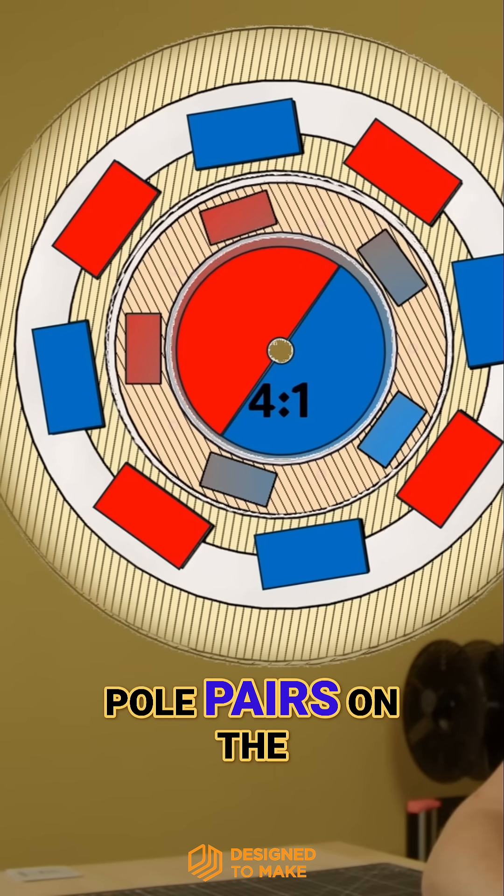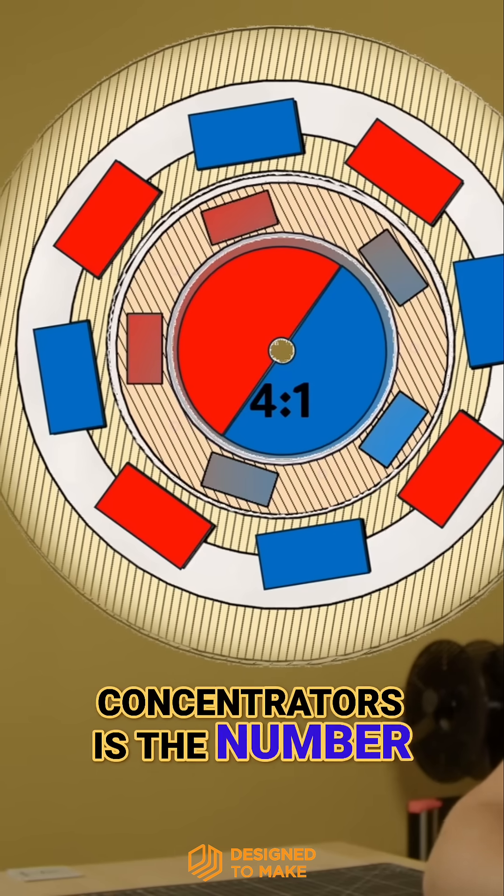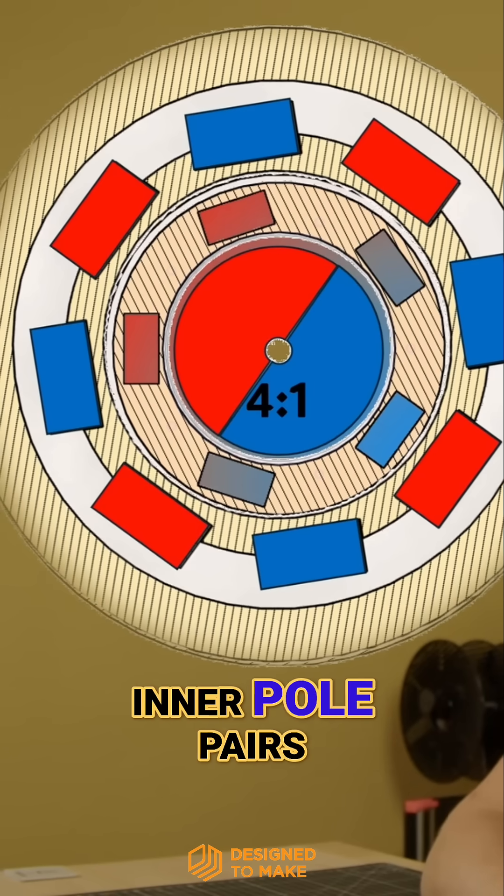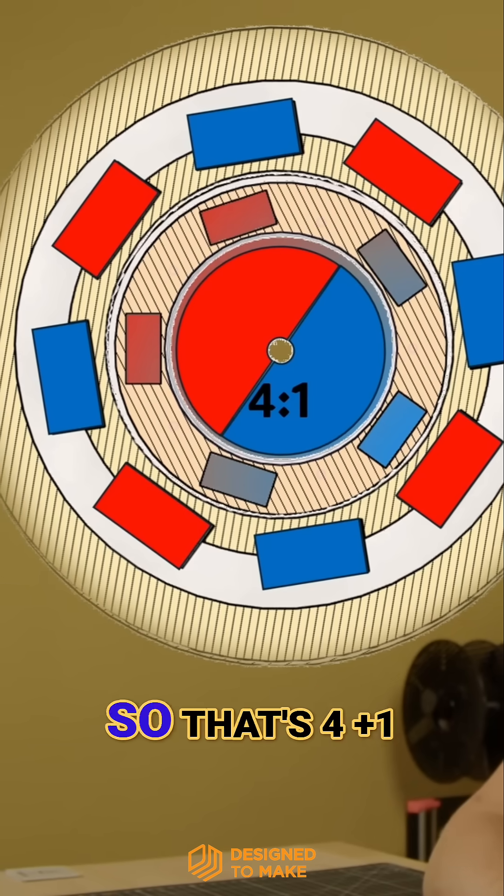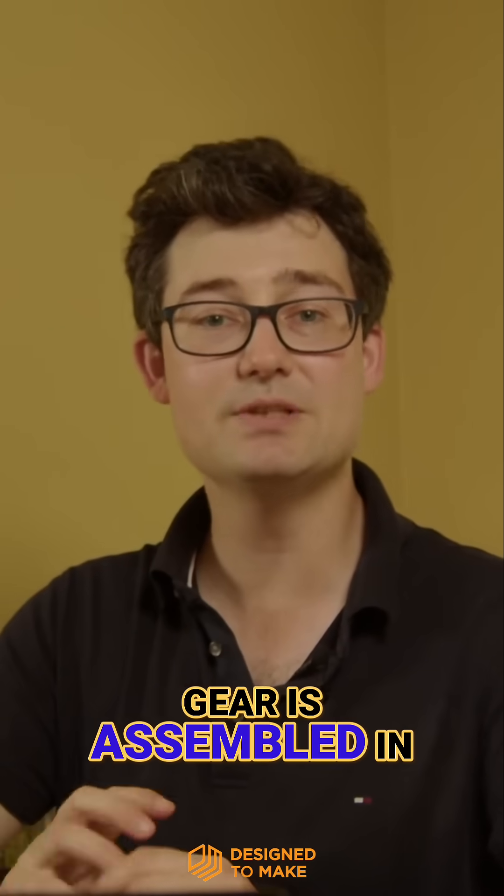Here I have four pole pairs on the outer and one on the inner, and the number of concentrators is the number of outer poles plus the number of inner pole pairs. So that's four plus one, which equals five. Let's take a look at how the magnetic gear is assembled in Fusion 360.